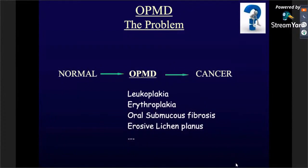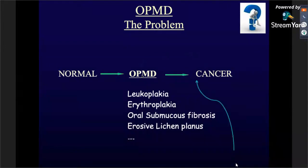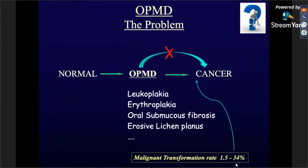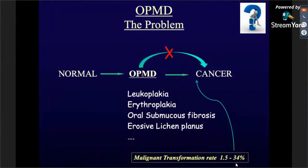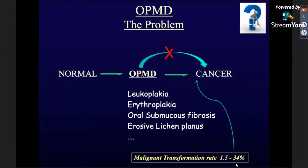Let's come back to oral potentially malignant disorders. In the actual world, normal mucosa should progress to OPMD, which over a period of time should go to cancer. Under OPMD you have leukoplakia, erythroplakia, oral submucous fibrosis, erosive lichen planus, and other lesions like reverse smoking, actinic cheilitis, discoid lupus erythematosus, dyskeratosis congenita, and less common lesions. But in real life, not all potentially malignant disorders become cancer — the malignant transformation rate is around 1.5%. The key question is: how do you predict which of these will become malignant and need aggressive treatment, and which can be watched or treated conservatively?